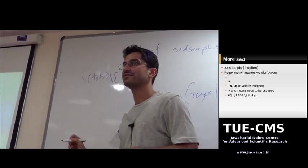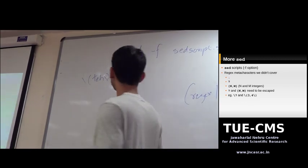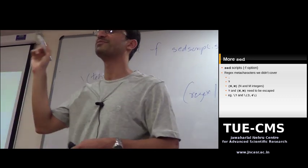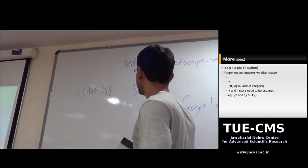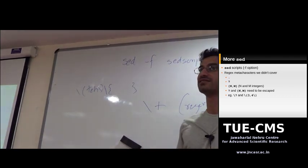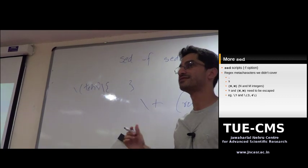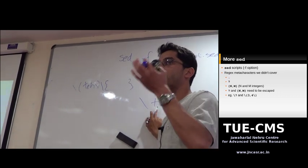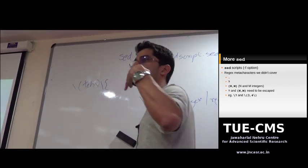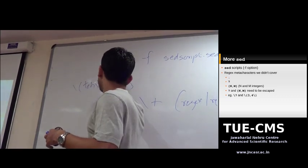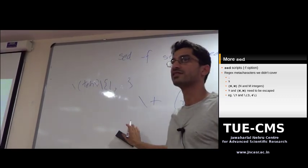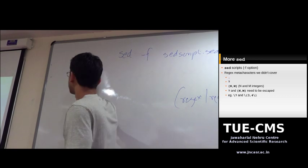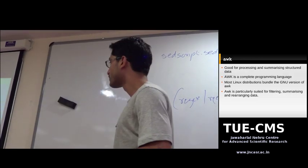There's one more type: interval expressions. Suppose I put the word TH with a star — zero or more occurrences of TH. Suppose I want to restrict the number of matches, say between 3 and 5. You use curly braces: `{3,5}` means at least 3 and at most 5 consecutive occurrences. If you omit the upper number — just `{3,}` — that means 3 to infinity. You can omit the lower: `{,5}` means 0 to 5. To simulate plus, you write `{1,}` — one or more.